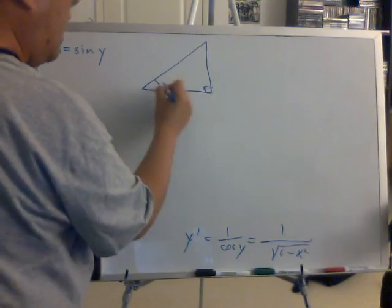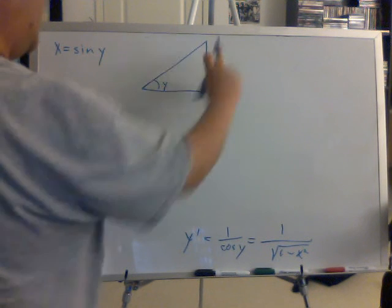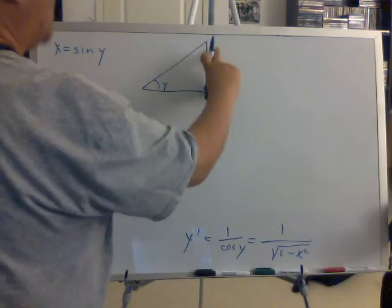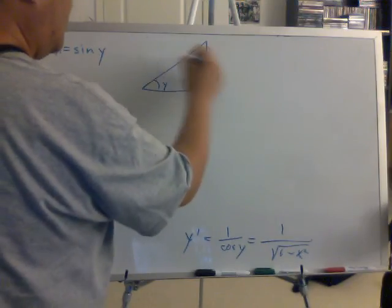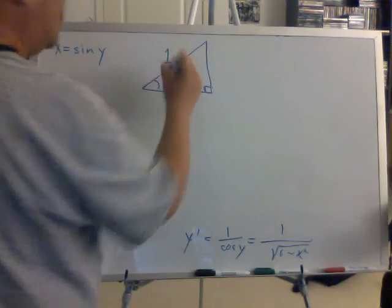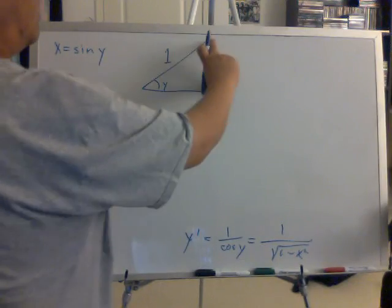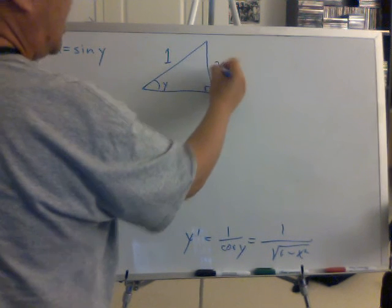You know the angle y is right here. And sine of y is basically the height over the hypotenuse. So assuming that the hypotenuse is 1, what will be a reasonable variable for the height? That would be x.